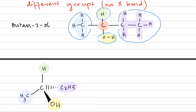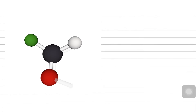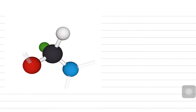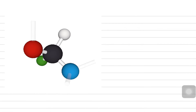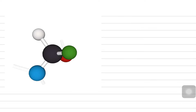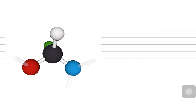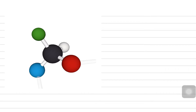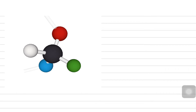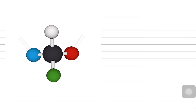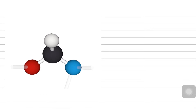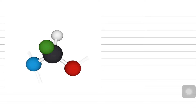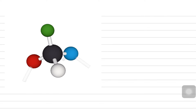Now imagine this structure: the black sphere represents the carbon atom and the other colored circles are different groups — the green, white, blue, and red. They are all different and attached to the same carbon atom. When you rotate the structure, you don't feel like any isomer is possible for this one.